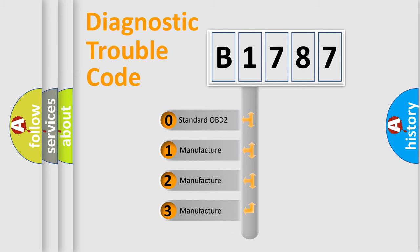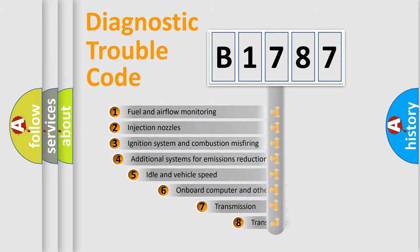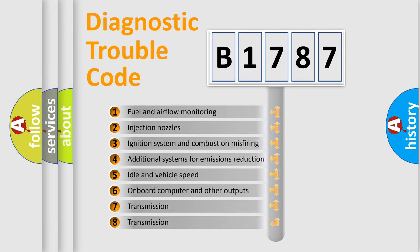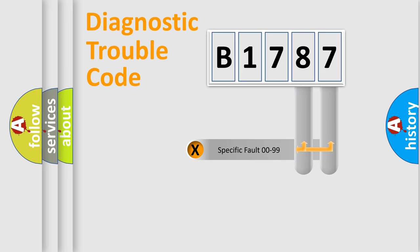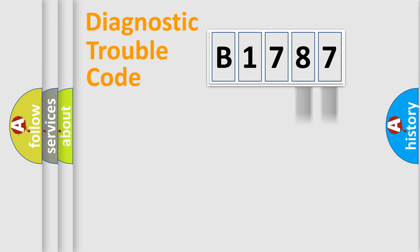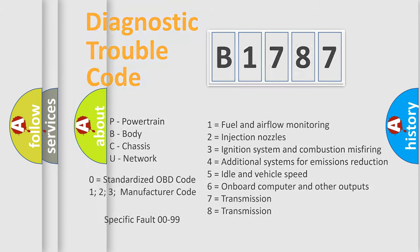If the second character is expressed as zero, it is a standardized error. In the case of numbers 1, 2, or 3, it is a manufacturer-specific error. The third character specifies a subset of errors. This distribution is valid only for the standardized DTC code. Only the last two characters define the specific fault of the group.